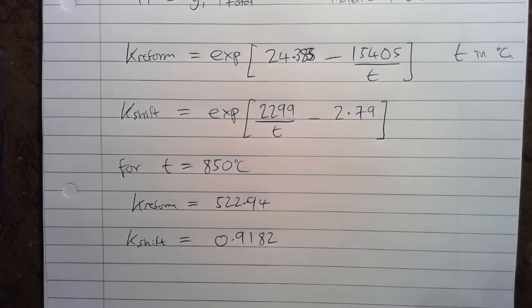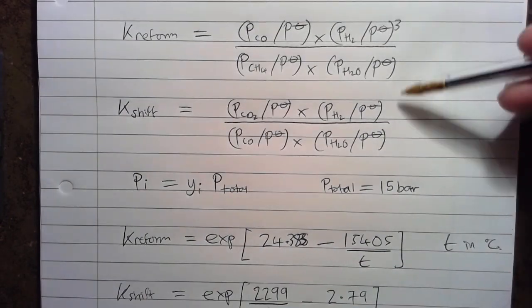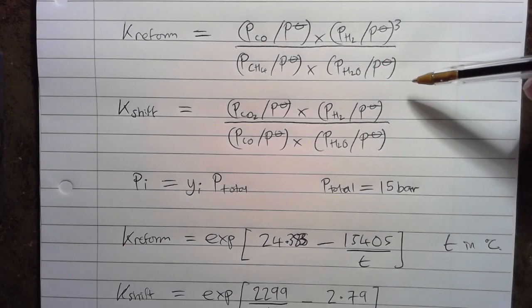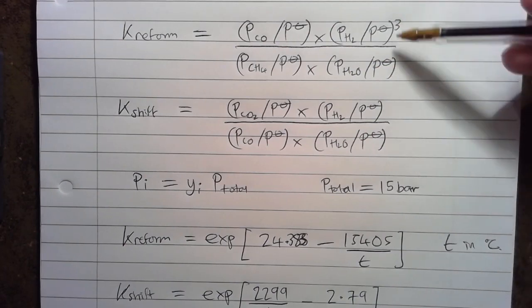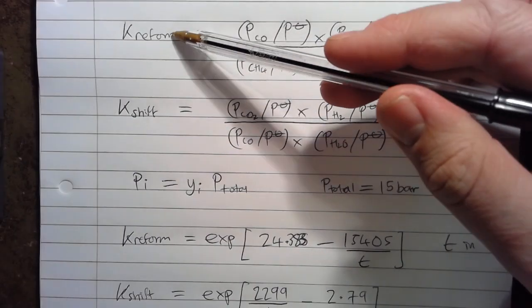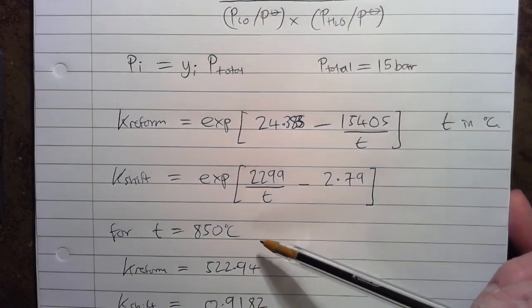So now we're at the point where we've got two unknowns. We've got X and Y as our unknowns and we've got two equations that can be solved. So these two equations are basically dependent on X and Y. So we need to solve for X and Y in order to get a value of K reform and K shift that equals these two values.